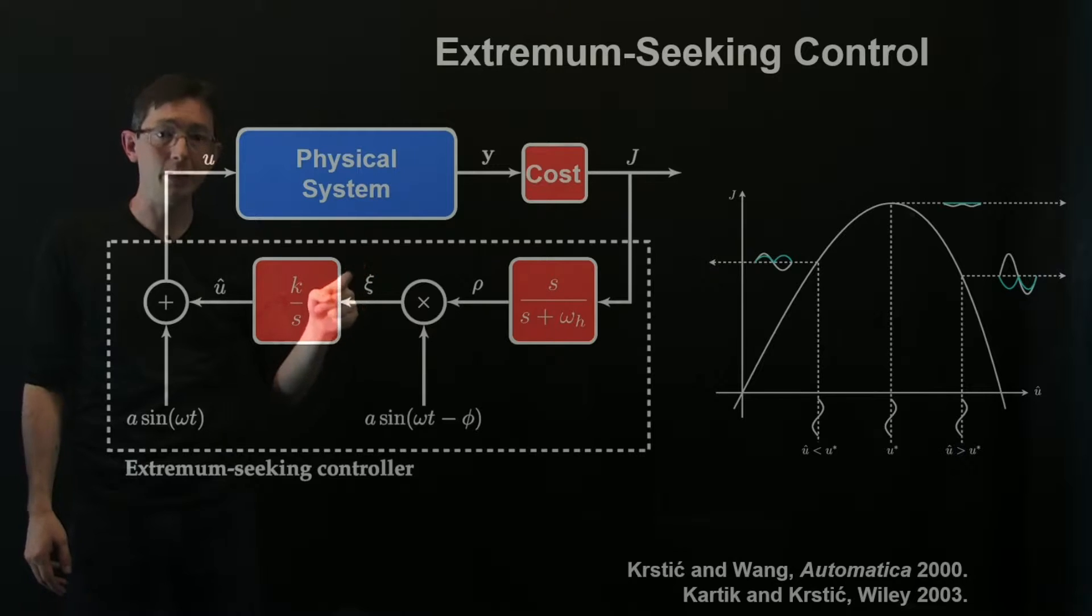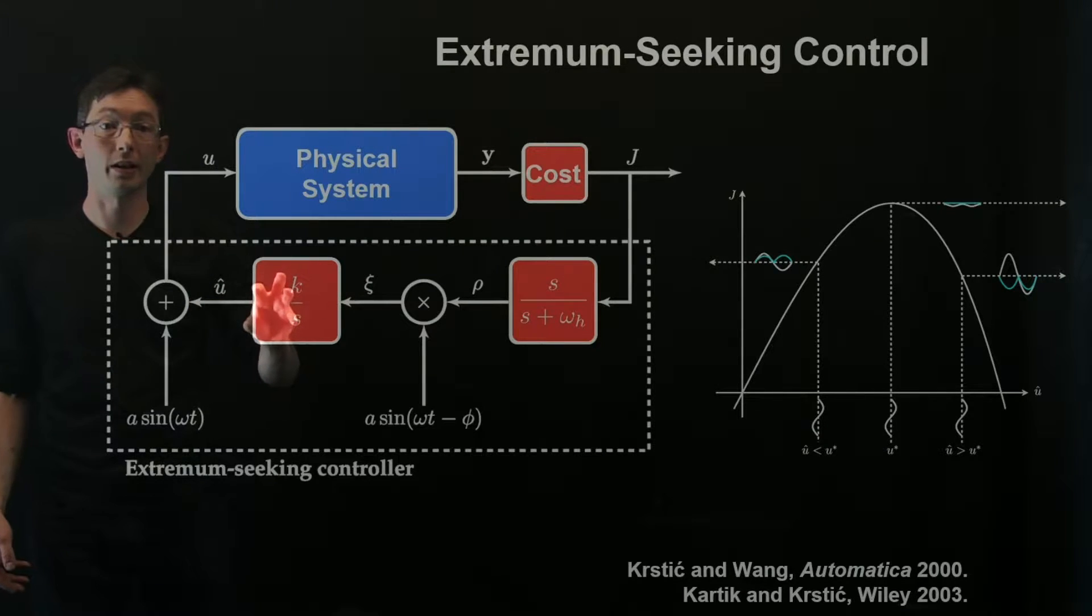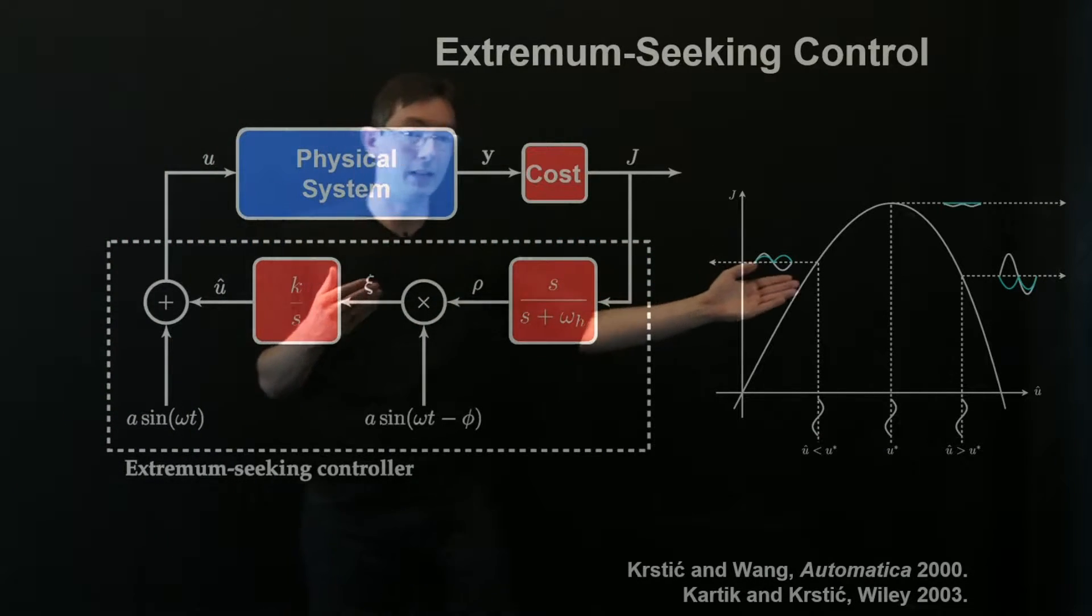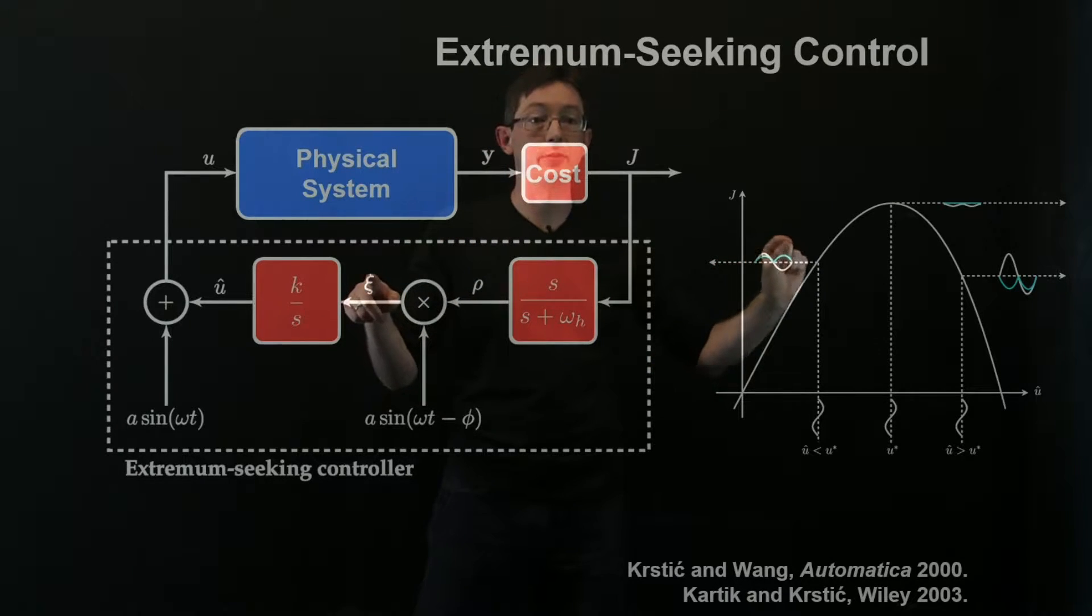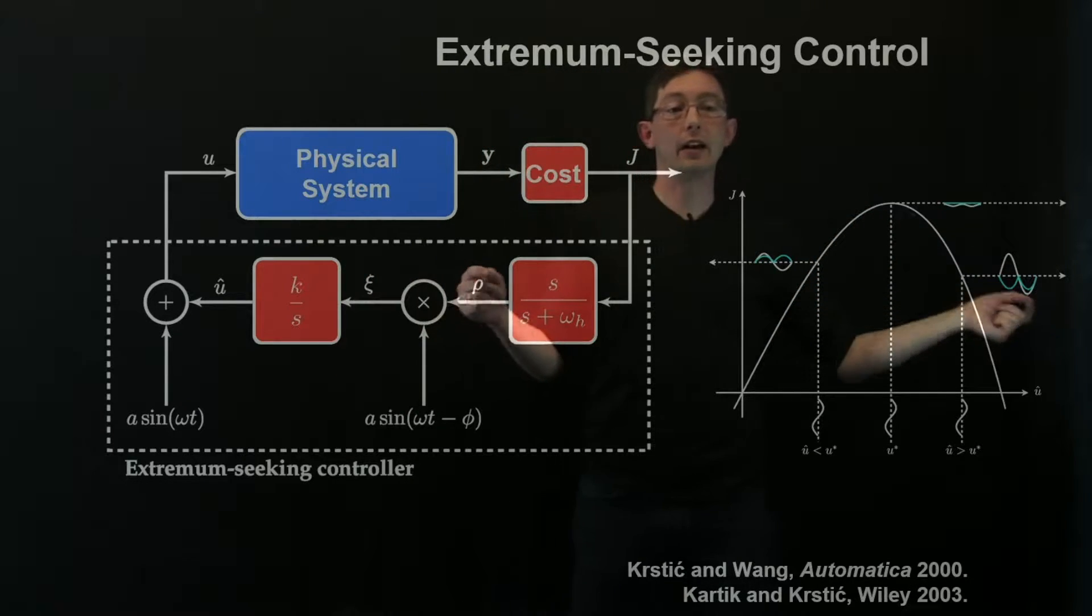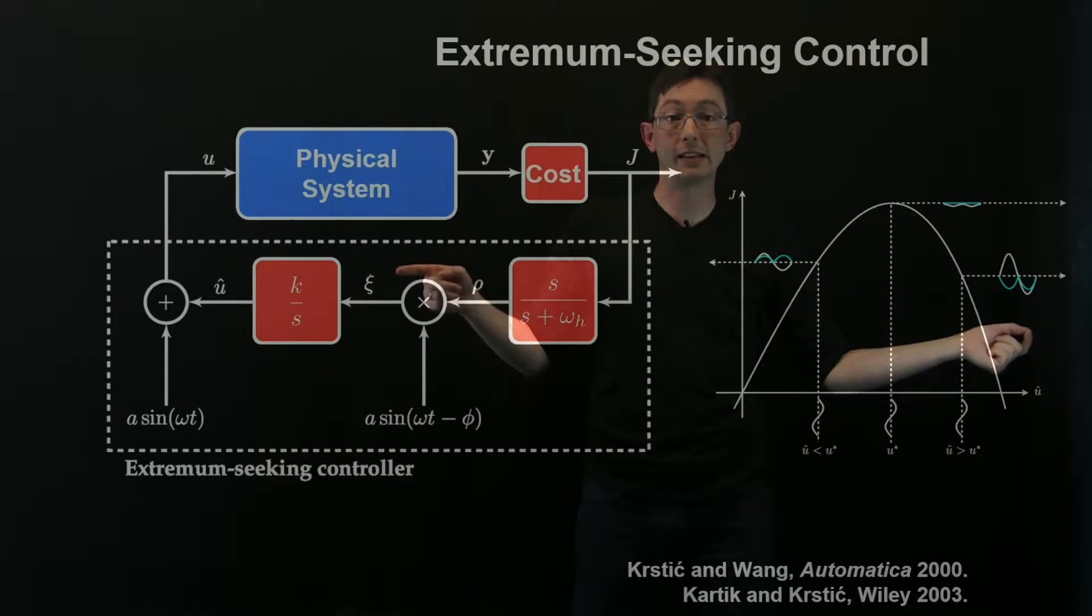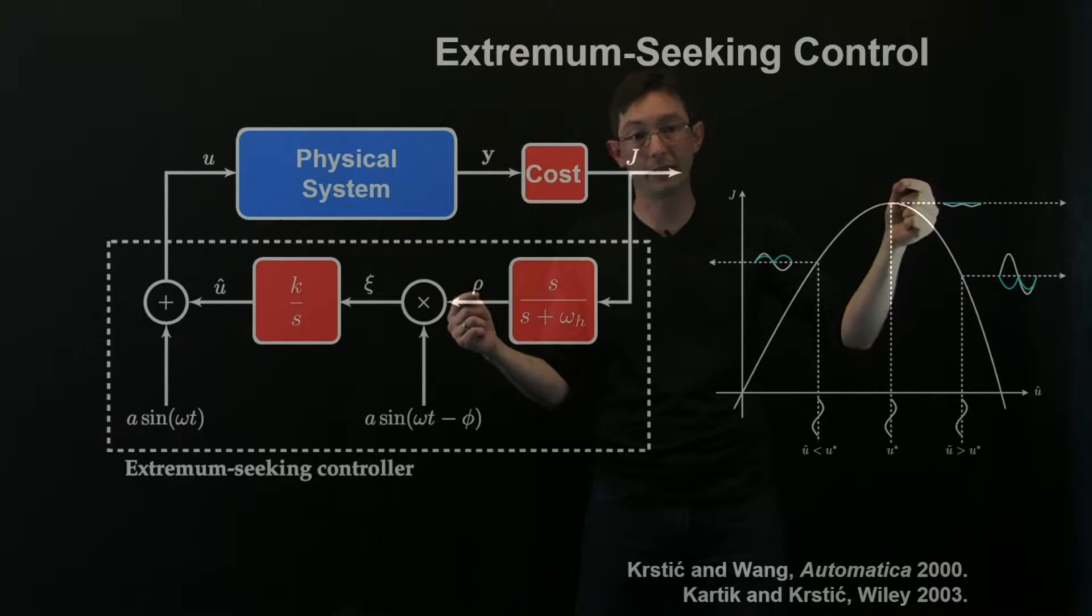And I continuously integrate that xi, that demodulated signal xi, into my best estimate u hat using this integrator block here. So if I'm to the left of this optimum point then xi is positive and I integrate that up and I move to the right until I converge. If I'm to the right of the optimum then xi is negative and I integrate that negative value, moves to the left until I hit this optimum.